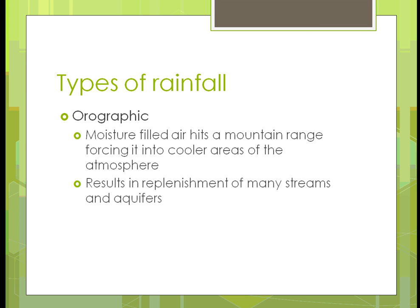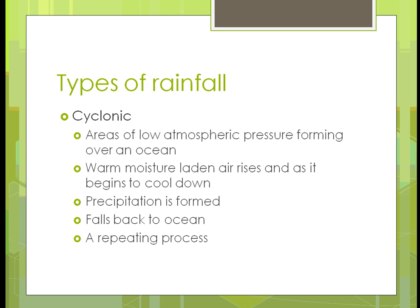Orographic rainfall occurs near mountain ranges or even small hills, where terrain forces colder air into the atmosphere. The cooler areas create water droplets, and this is a big source for many streams and aquifers. Water runs down the mountain and fills underground groundwater. Cyclonic rainfall involves areas of low atmospheric pressure forming over the ocean — the sun heats it, moisture rises, creates vapor, cools, forms clouds, and precipitation falls back into the ocean in a continual process.